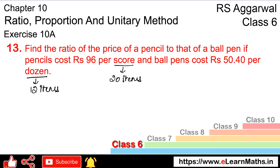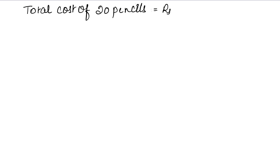We need the price of 1 pencil and 1 ball pen to find the ratio. The total cost of 20 pencils is Rs. 96 per score, since there are 20 items in a score. To find the cost of 1 pencil, we divide: 96 divided by 20 gives us 48 upon 10, which in decimal is Rs. 4.80.